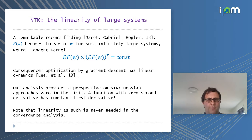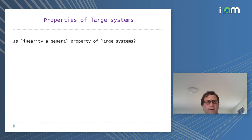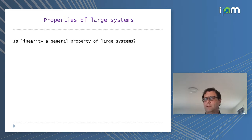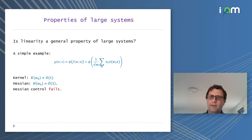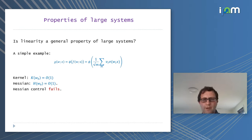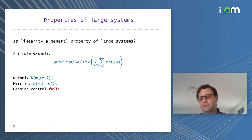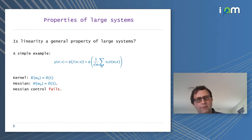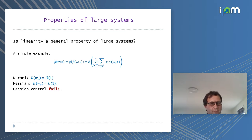Something more can be said about this: linearity is not a general property of large systems. Take the same neural network composed with a nonlinear function phi. For this composed system, the kernel is still of order one, but the Hessian is no longer small. Why? The second derivative has an extra term related to phi'' which never disappears if phi is nonlinear, and it's of order one. So the Hessian control fails.